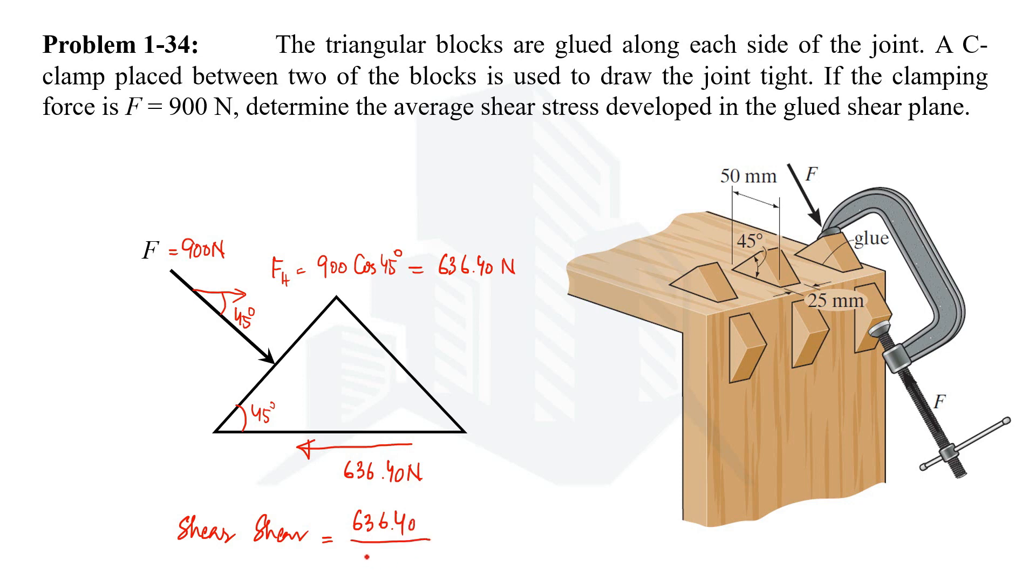So on doing calculation we are going to have 509 kPa as the shear stress that is being developed due to the application of 900 newton force through the C-clamp. So this is how the calculation for this kind of example is being done.